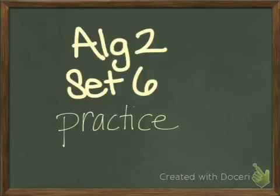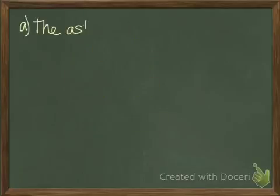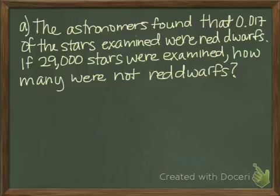Algebra 2, set 6, practice. The astronomers found that 0.017 of the stars examined were red dwarfs. If 29,000 stars were examined, how many were not red dwarfs?